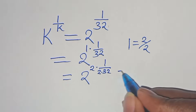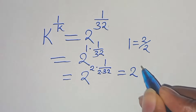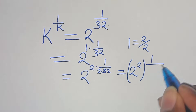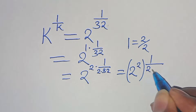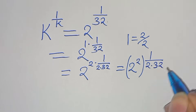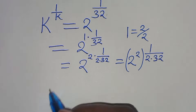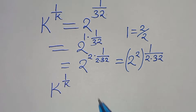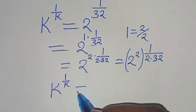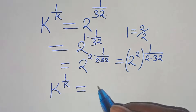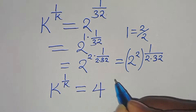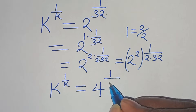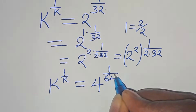This gives us 2 to the power of 2, raised to the power of 1 over 2 times 32, which equals 1 over 64. So k to the power of 1 over k equals 2 to the power of 2, raised to the power of 1 over 64, which is 4 to the power of 1 over 64.